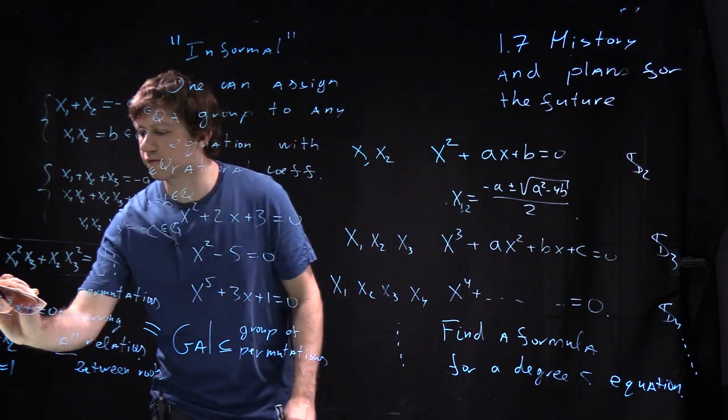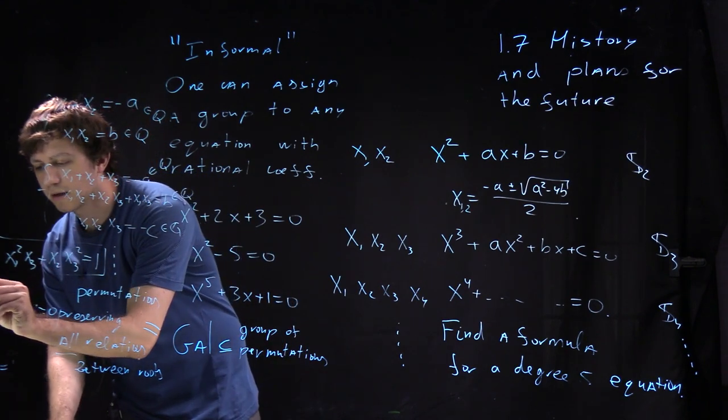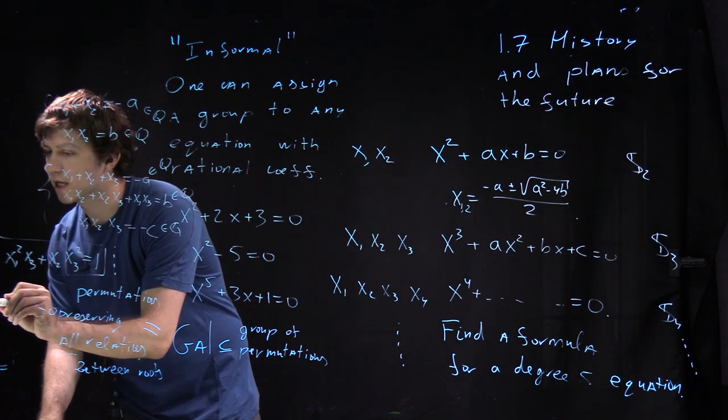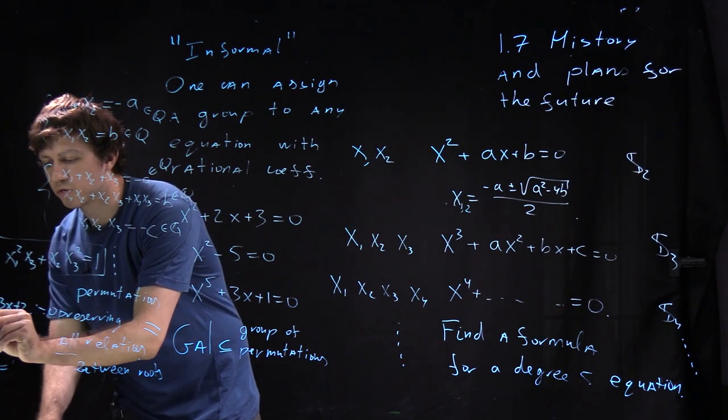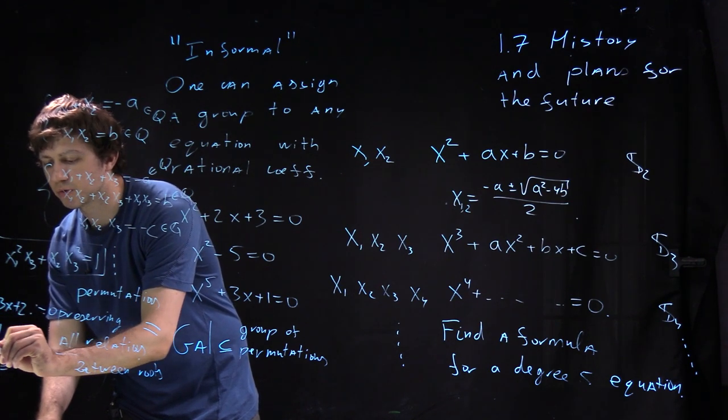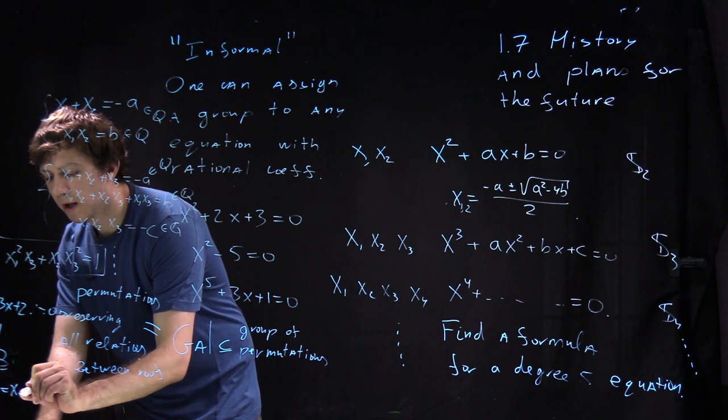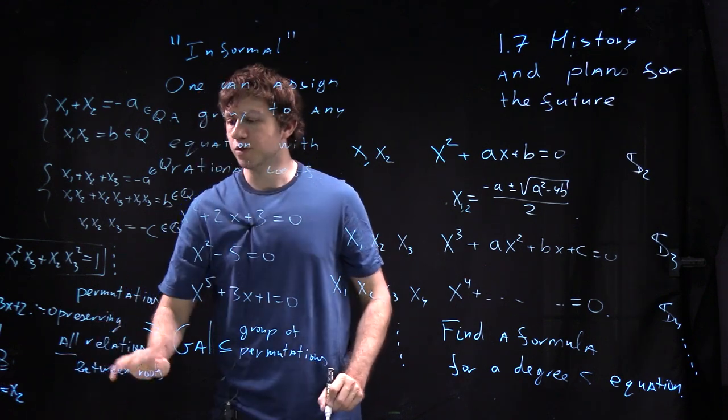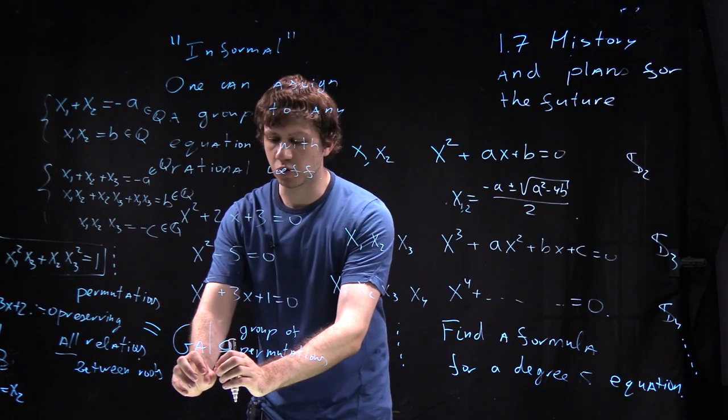Let's take instead sorry let's take for instance x squared minus 1 times x minus 3x plus 2. And then there is one root which is equal to 1 another root which is equal to 2 and for instance there is a relation 2x1 equal to x2 and so you cannot simply exchange the roots preserving all the relations this relation will break. So this is why for such equation Galois group becomes smaller